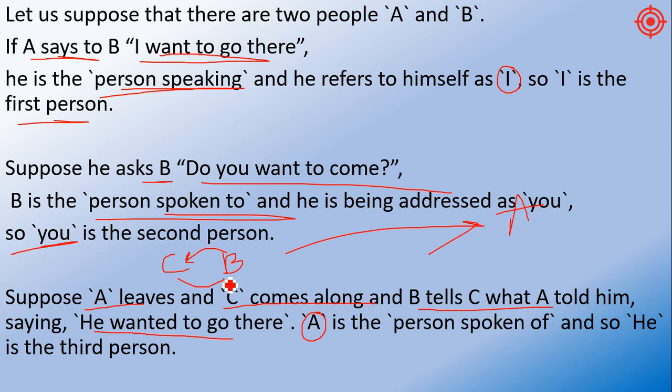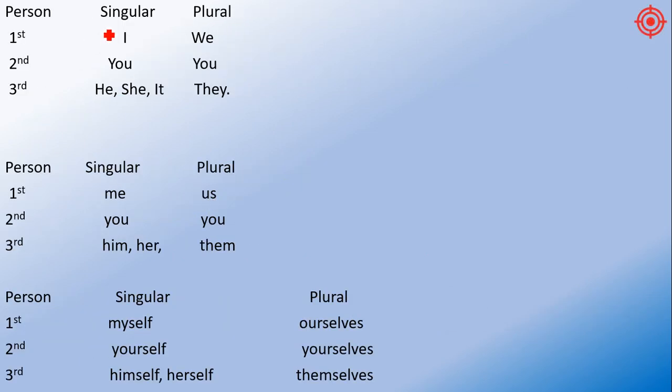First person is the person who is speaking. There are some singular and plural words involved. You can have 'I' and 'We'. 'You' is both singular and plural, so it's the same. For third person, 'He, She, It' are singular, and 'They' is plural.